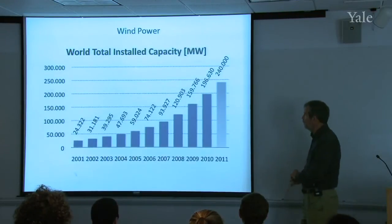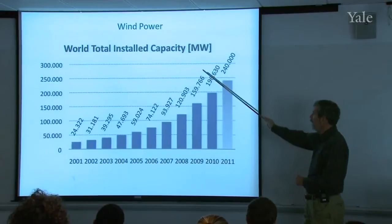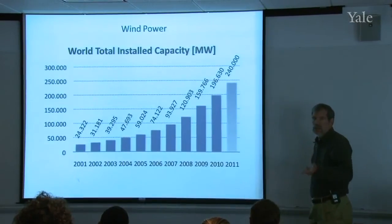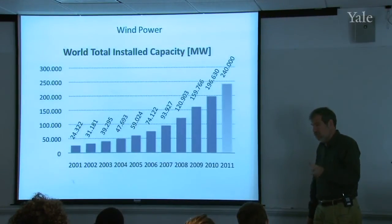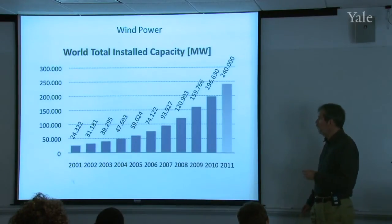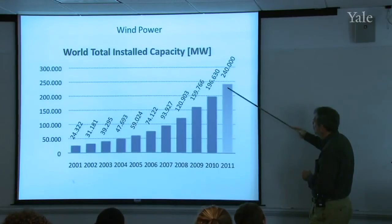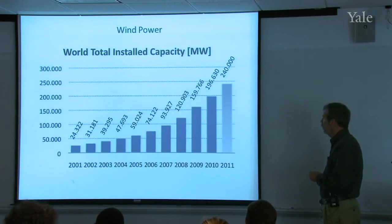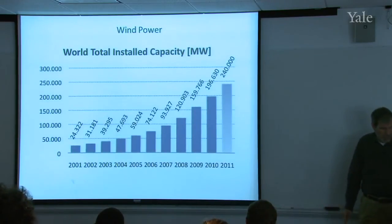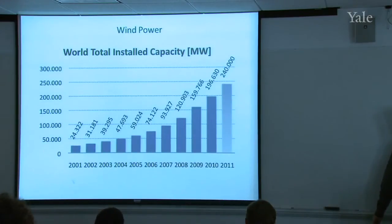Here's the world installed capacity. Once again, I'm using the word capacity, not generation. There's probably a factor, you probably have to divide that by two or three. The capacity factor is usually about 30% to 40% for a good wind installation. Sometimes it's lower than that, 20%, 15%, 10%. But to get to generation, you probably have to divide this number by about three. So in 2011 projected, it's 240,000 megawatts is the installed capacity worldwide. And climbing rather rapidly. Small, on the scheme of things, that's still a pretty small number. But the good news is it's climbing rather rapidly.